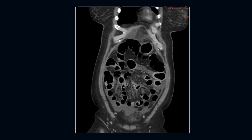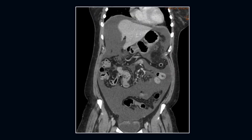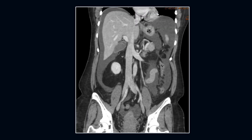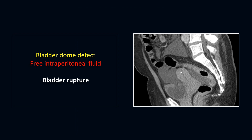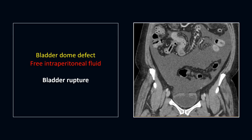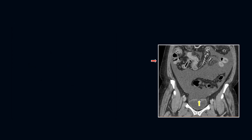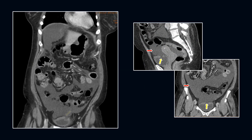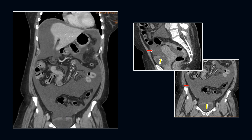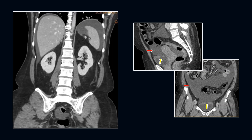Next case, here we see a lot of free fluid in the abdomen and pelvis. We can now see the source of the fluid — there's a large defect in the dome of the urinary bladder with free fluid around the bladder and the uterus. On coronal images, we see the defect in the bladder dome and lots of free fluid in the abdomen and pelvis. Note that the free fluid is seen around the bowel loops. There is rupture of the bladder dome.